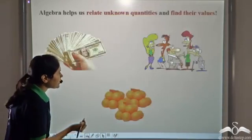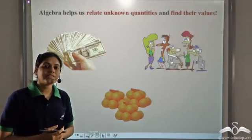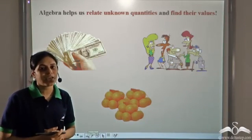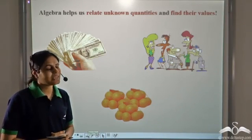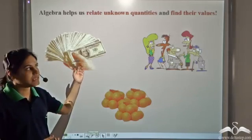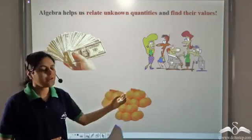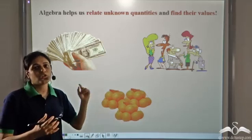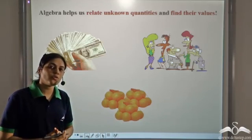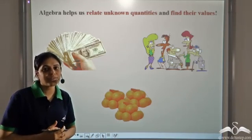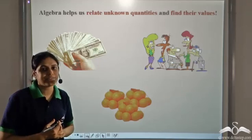So how do these letters simplify things for us? Letters are used to represent anything unknown. So we can say x amount of money, y number of people, or m number of oranges. So letters represent unknown quantities and help us relate them and find their values.